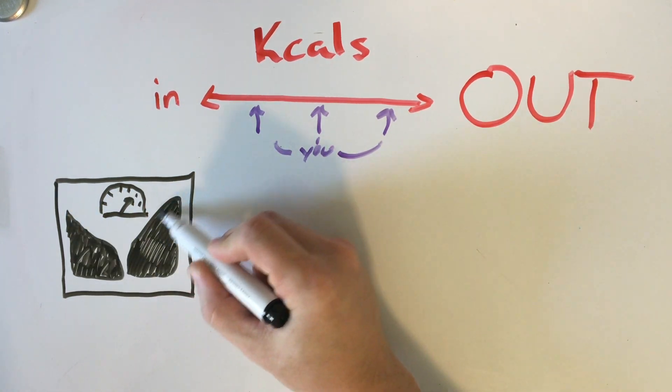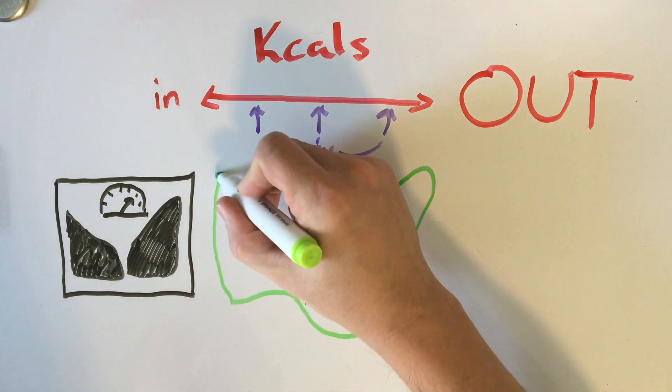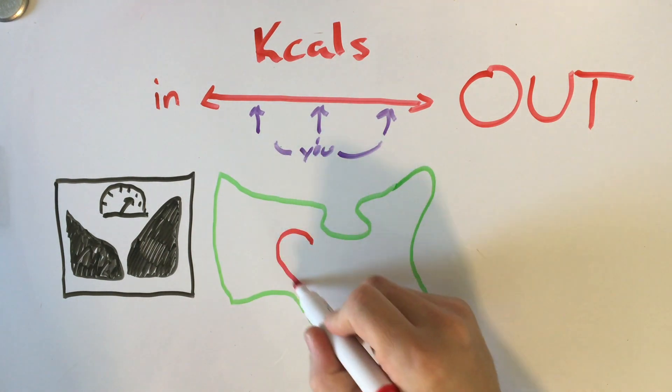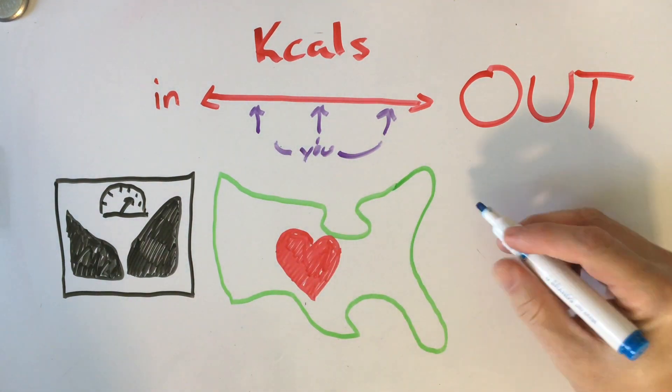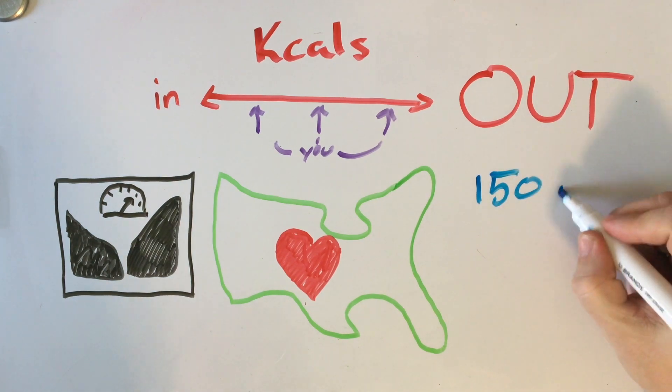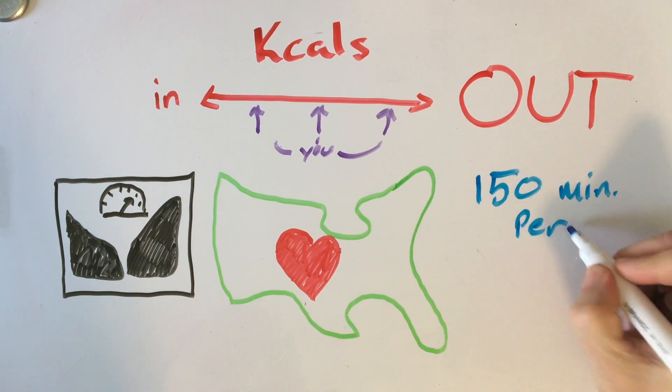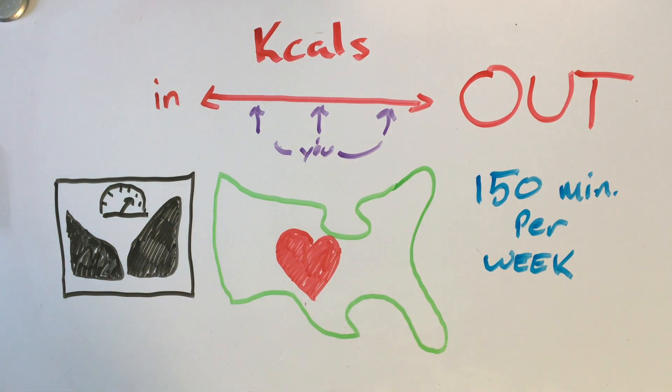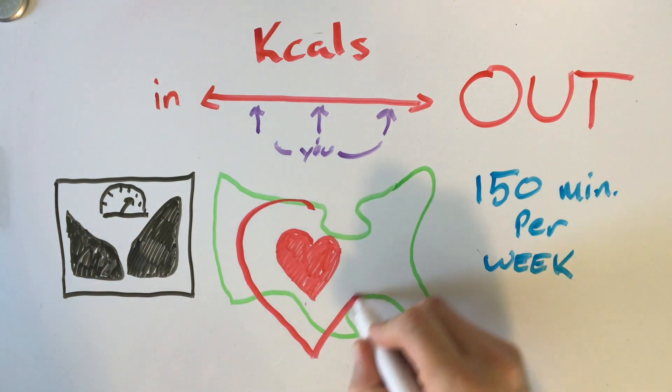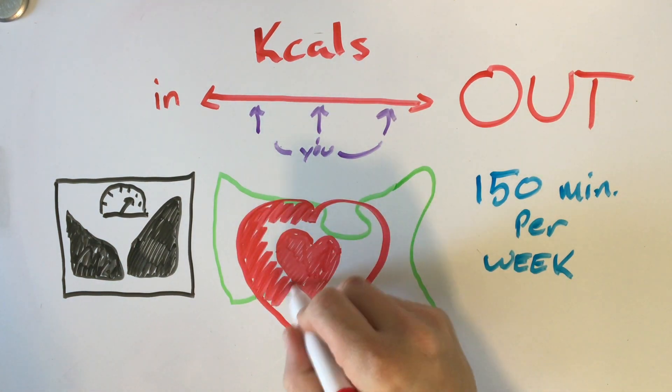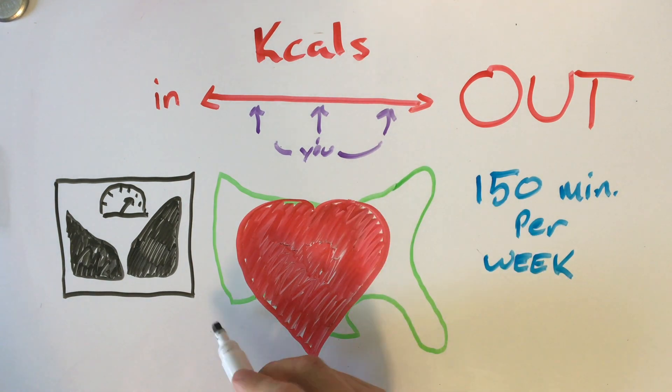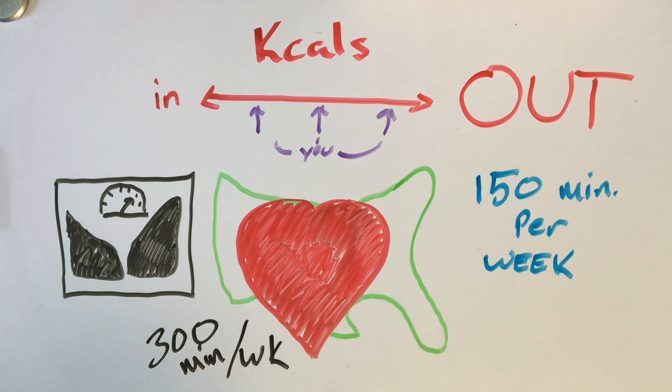So according to the American Heart Association, in general, they recommend that a person get a minimum of 150 minutes per week of cardiovascular exercise. So this breaks down to about 30 minutes, five days a week. And with kind of a long-term goal of increasing that to 300 minutes per week, or 60 minutes, five days a week.